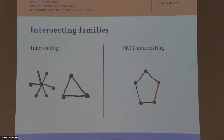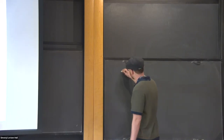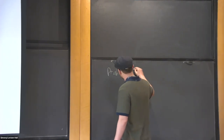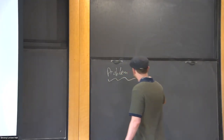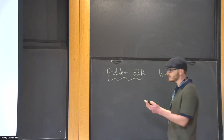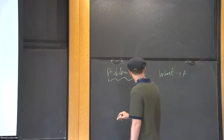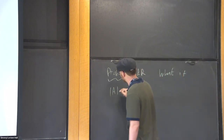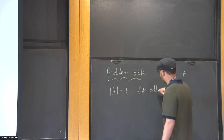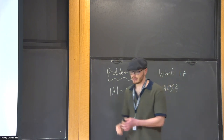What Erdős-Ko-Rado makes more interesting is what happens if the sizes of the sets in F are restricted to be of a given size k. What then is the largest intersecting family?